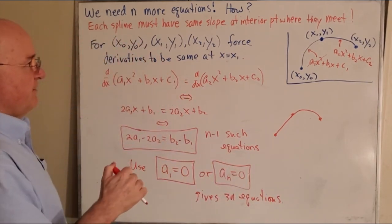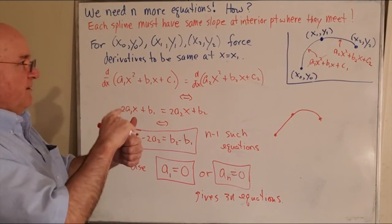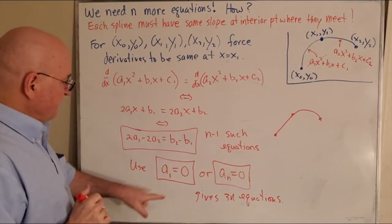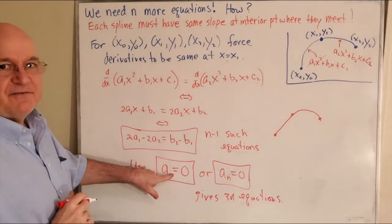That would allow us to solve for the 3n unknowns: a1, b1, c1, all the way up to an, bn, cn. And one of them we already have—a1 would be zero.